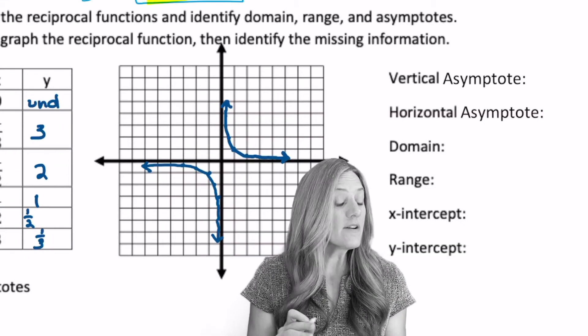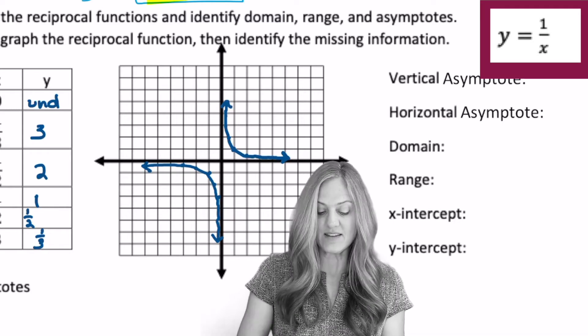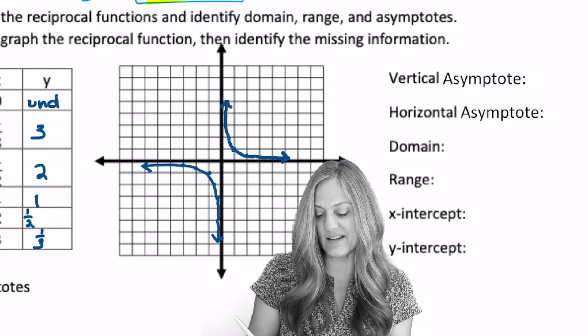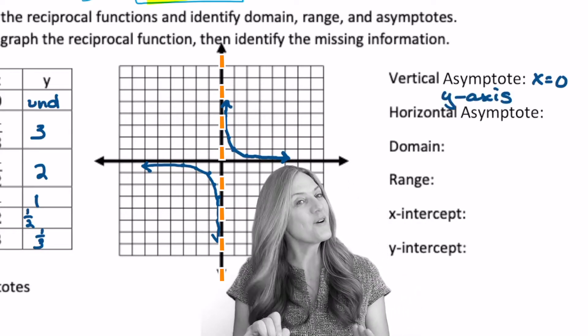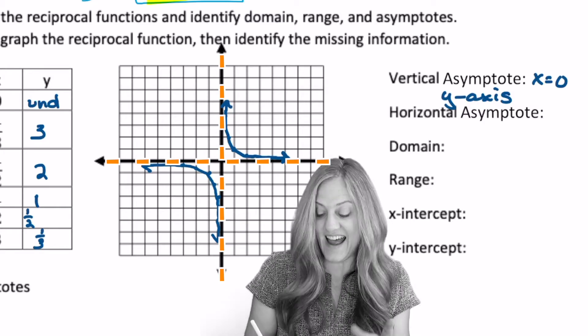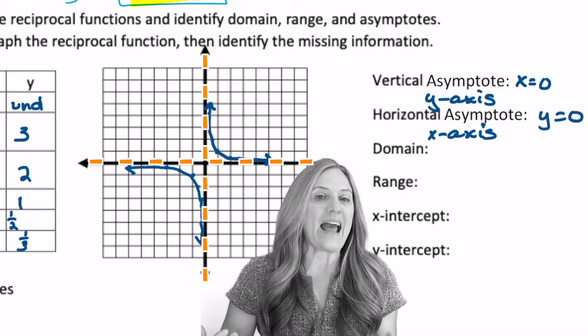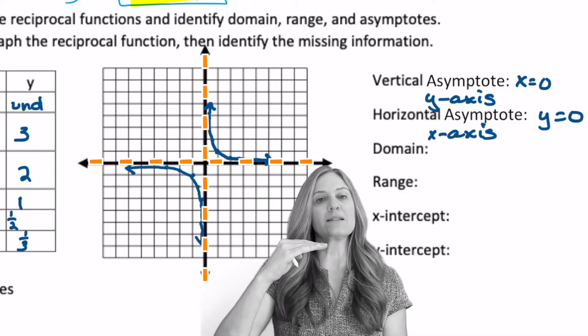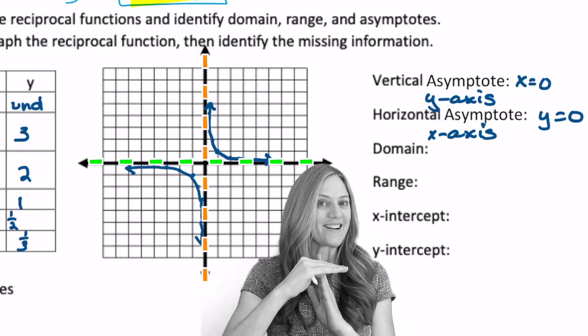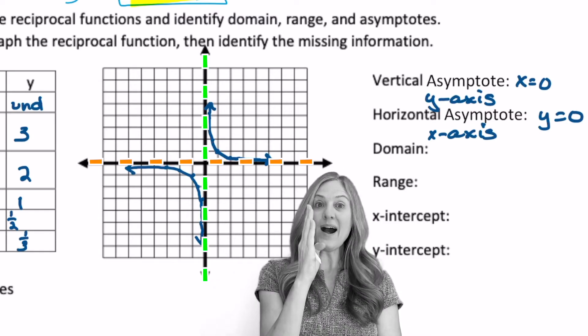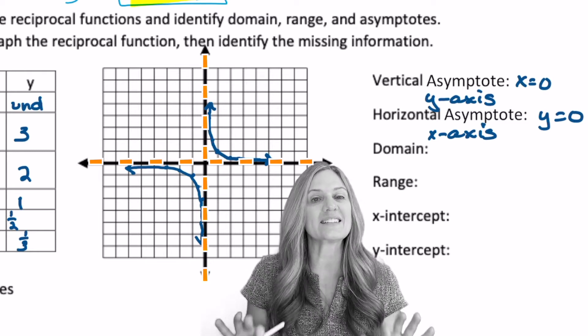So for our parent function, y equals 1 over x, the reciprocal function, we have vertical asymptote of the y-axis. So that is x equals 0. And horizontal asymptote of the x-axis, or y equals 0. Remember, when we're naming an asymptote, think of which axis does it cut through. So the x-axis cuts through the y-axis, so we say y equals 0. And the y-axis cuts through the x-axis, so we say x equals 0.